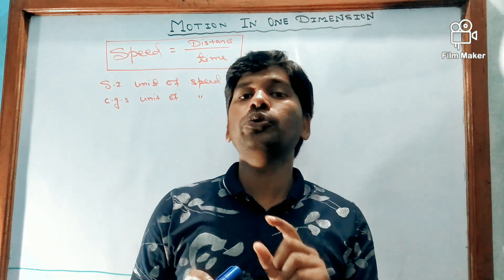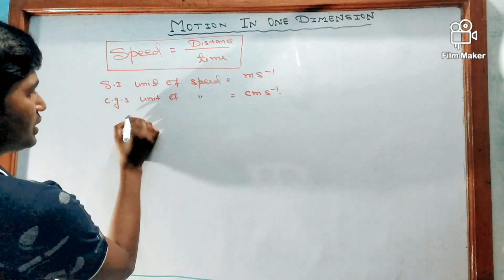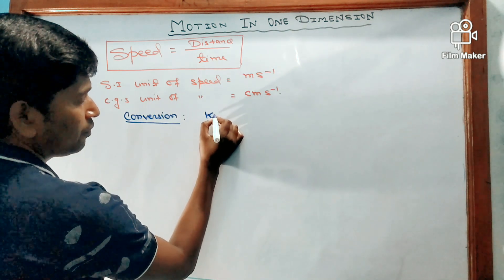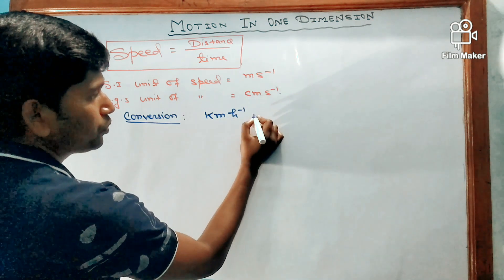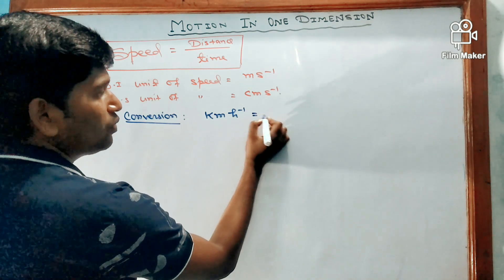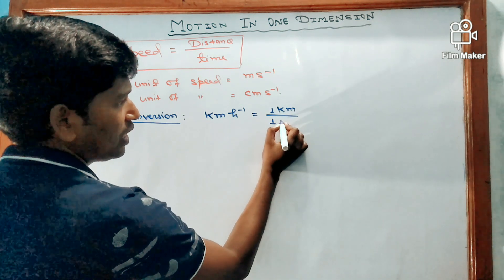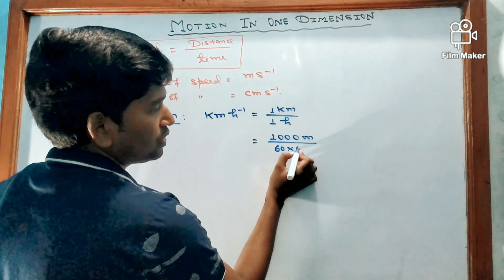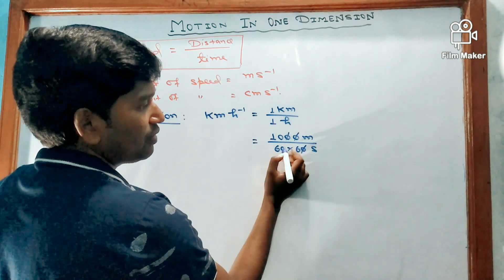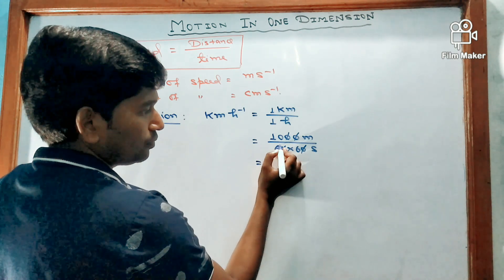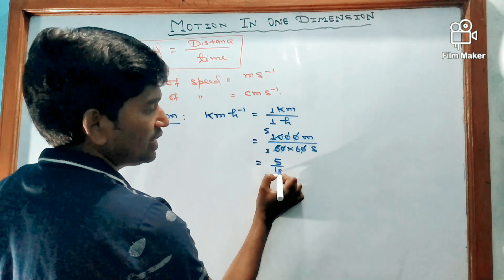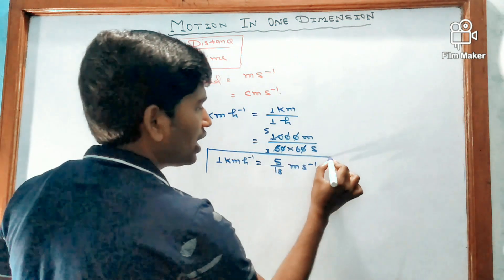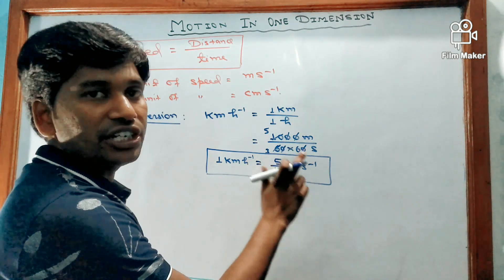Conversion from kilometer per hour to meter per second: one kilometer per hour means one kilometer divided by one hour. One kilometer equals 1000 meters, and one hour equals 60 × 60 = 3600 seconds. So 1000 divided by 3600 simplifies to 5/18. Therefore, 1 kilometer per hour equals 5/18 meter per second.